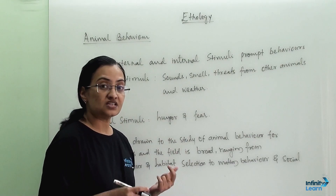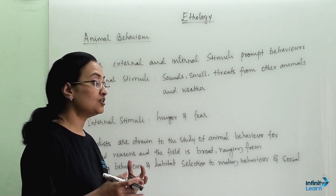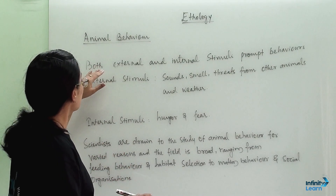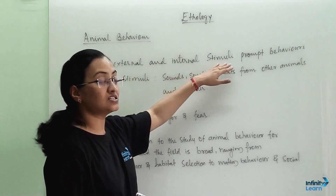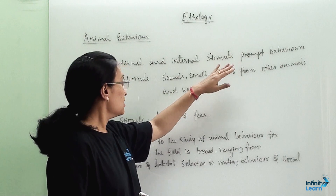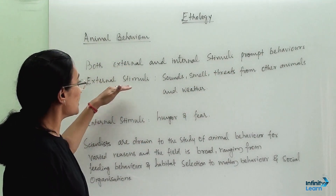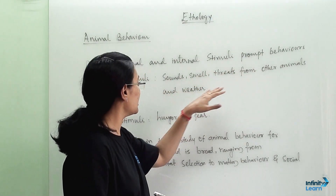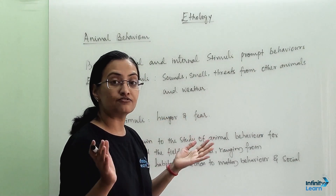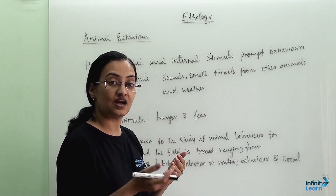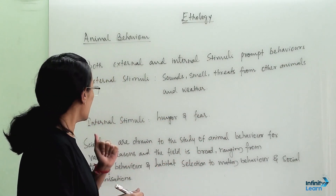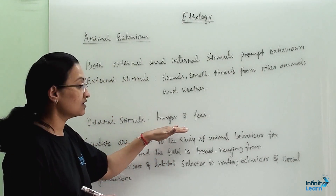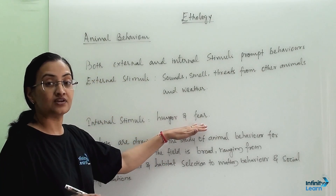Scientists have included both the prompt behavior from external and internal stimuli. External stimuli includes sound, smell, threat from other animals and weather — all external factors fall under external stimuli. Whereas internal stimuli covers hunger and fear-like factors.